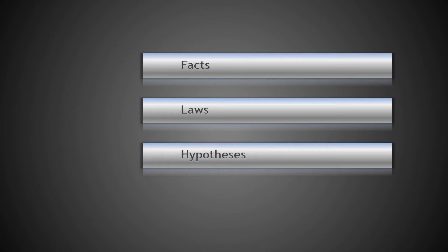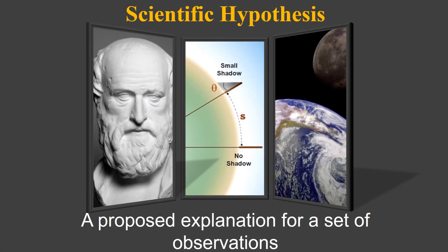For our third definition, let's talk about hypotheses. A hypothesis is not an educated guess — it is a proposed explanation for a set of observations, or it makes some type of prediction of an outcome. For example, almost 2,200 years ago, Eratosthenes made two observations: there was a small shadow cast by a post in Alexandria, but at the same time of day, south of him in Cyene, there was no shadow. So he proposed that the earth was round rather than flat, measured the distance between the two posts, and pretty much correctly calculated the circumference of the earth within a couple hundred miles. His hypothesis was well supported by his observations.